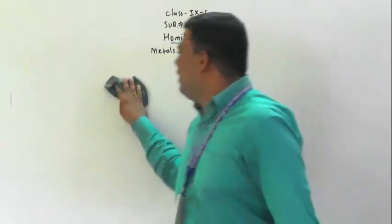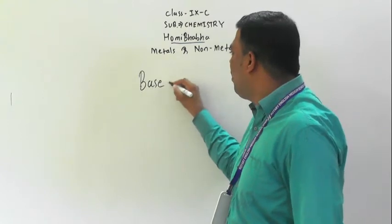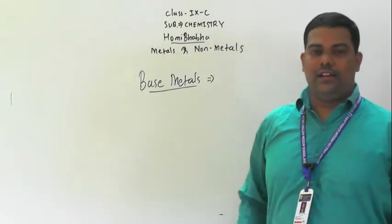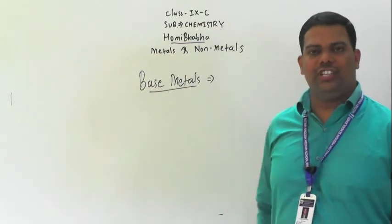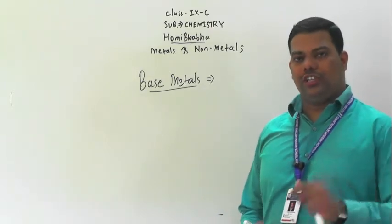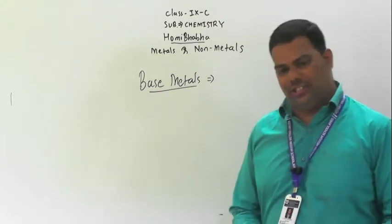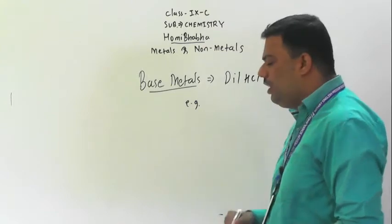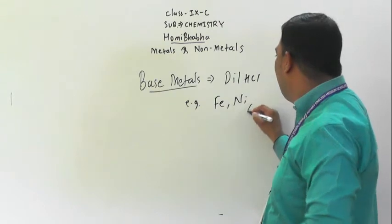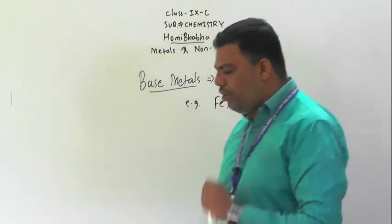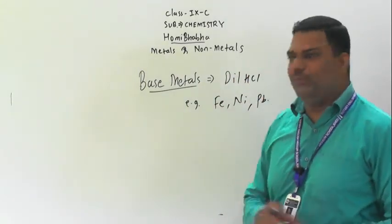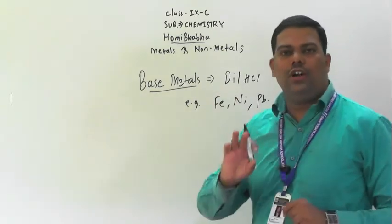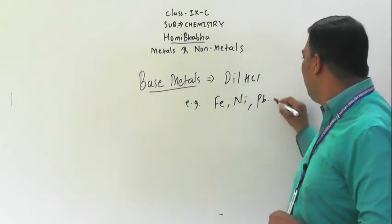Next is the term base metals. Base metals are those which are easily oxidized or corroded. These are easily corroded by dilute HCl. Examples of base metals are iron, nickel, and lead — those metals which corrode or oxidize easily with dilute HCl.